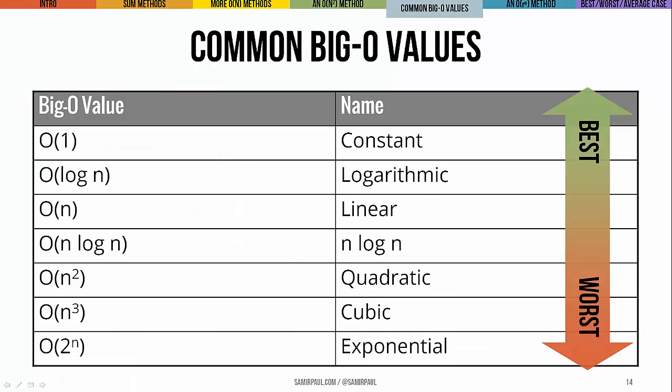So now we've seen a bunch of linear methods and one quadratic method, O of n squared. Those are just two of the most frequently encountered big O values. There are other common ones with their own names. For an O of 1 constant time algorithm, think of a method that just returns the sum of the first and last numbers of an array — the runtime doesn't depend at all on how long the array is, just however long it takes to access those two elements. A little bit later we'll also see examples of logarithmic and n log n methods.